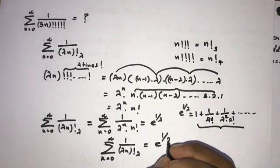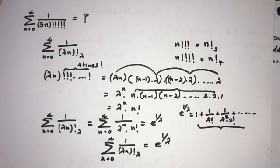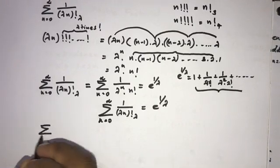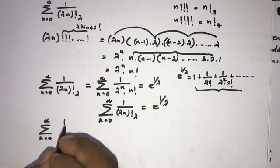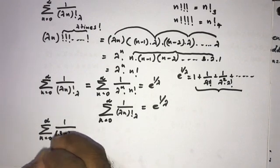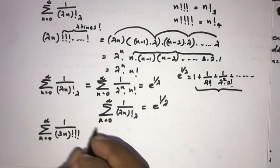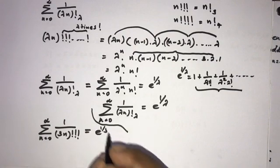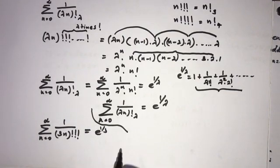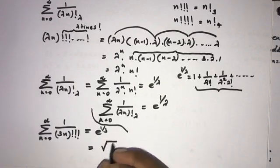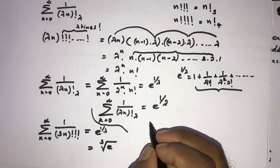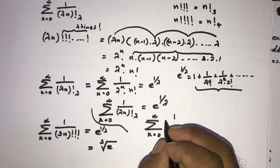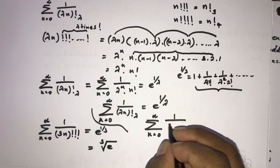This is the general result: the sum from n equals 0 to infinity of 1 over (lambda·n)!⁽λ⁾ equals e^(1/lambda). For example, if lambda equals 3, the sum of 1 over (3n)!⁽³⁾ equals e^(1/3).